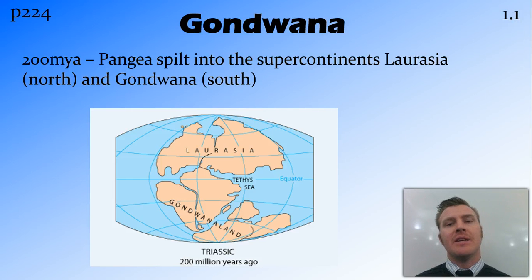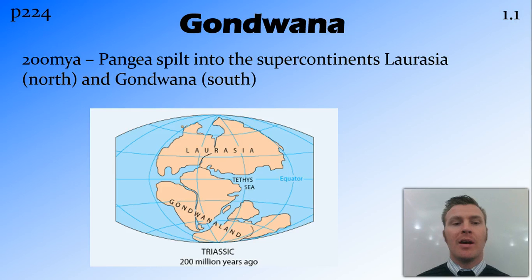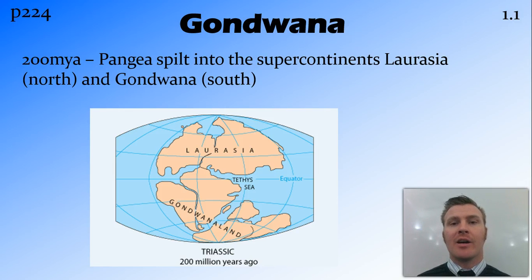200 million years ago, Pangea split into two supercontinents. The northern supercontinent Laurasia consisted of Eurasia and North America, while the southern supercontinent Gondwana consisted of all the southern continents: South America, Africa, Australia, Antarctica, and India.